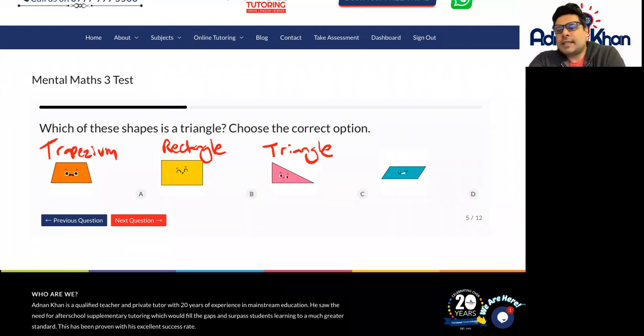And shape D is what we call a parallelogram or a rhombus. So we'll make this a rhombus, to be clear.